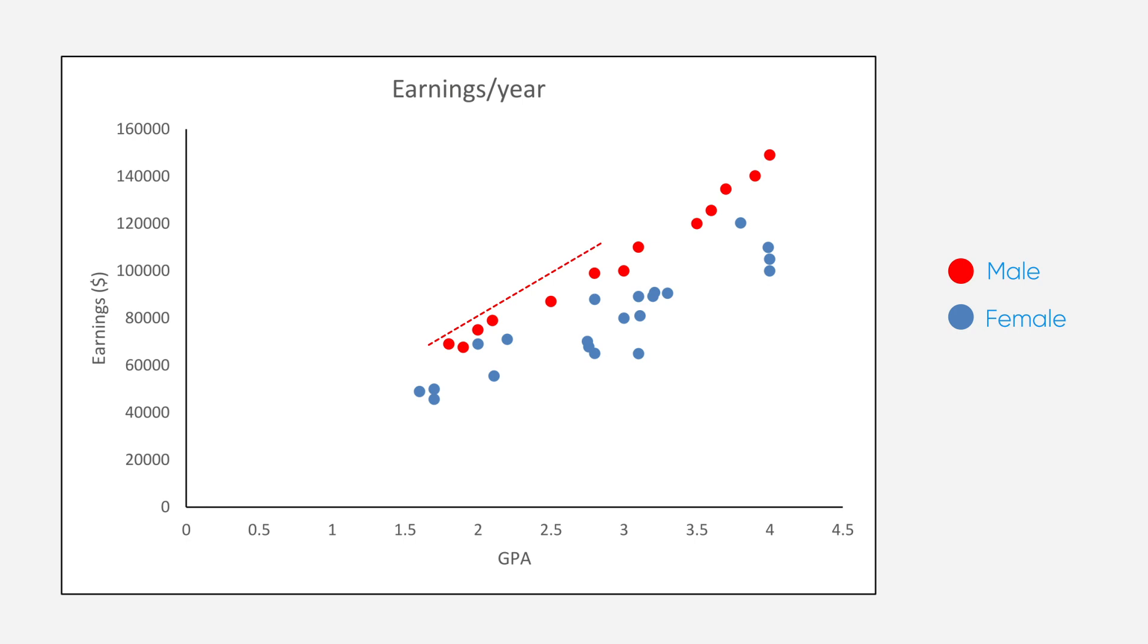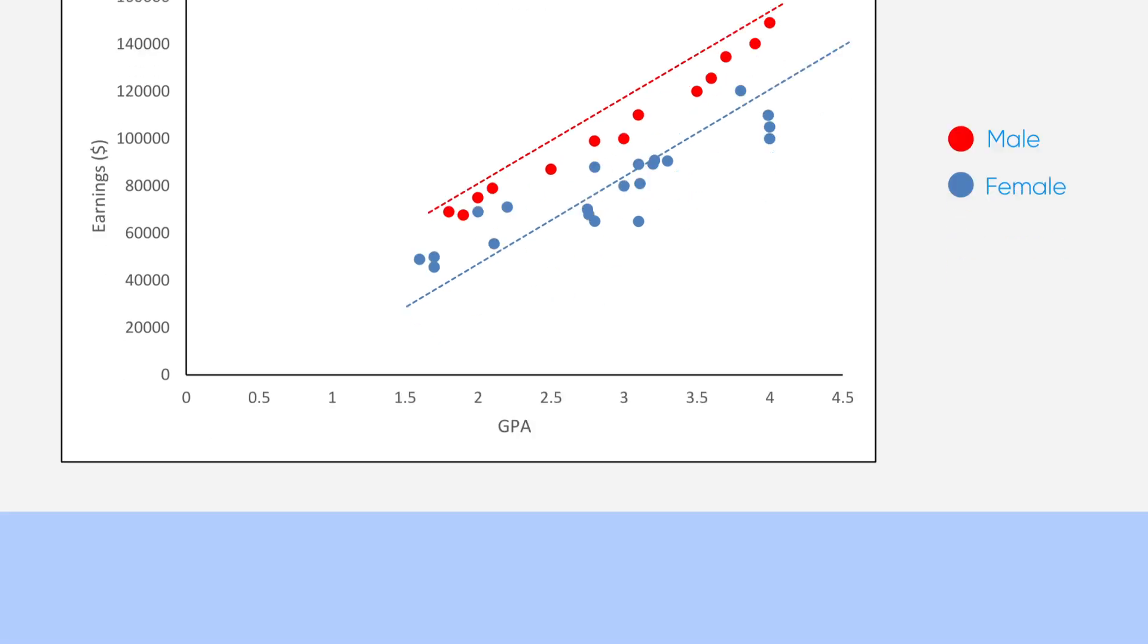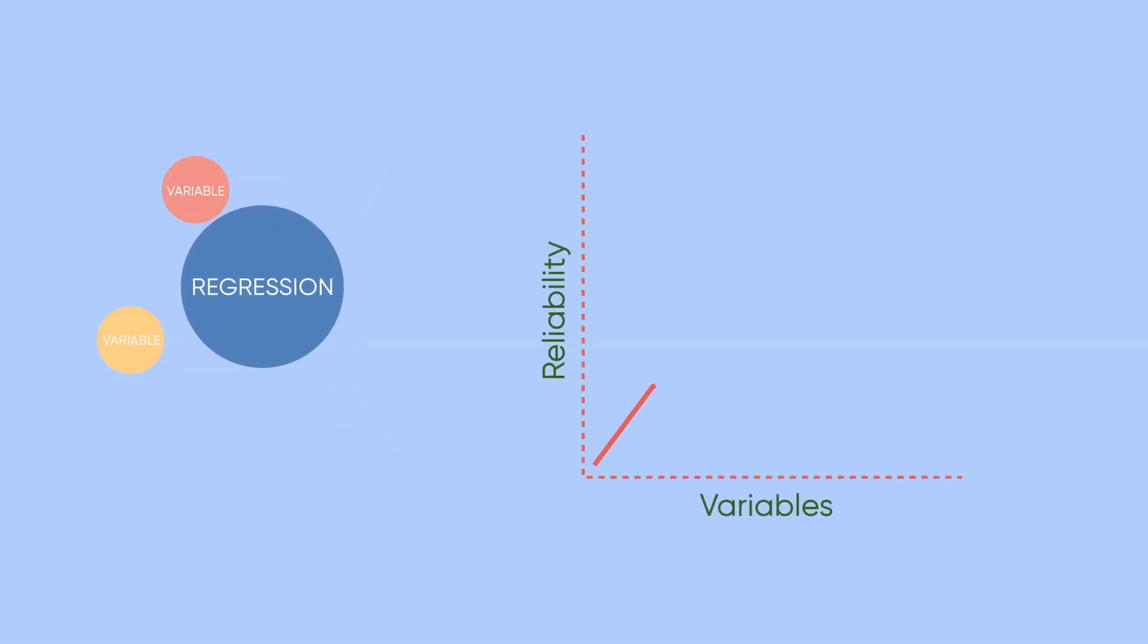We are thinking that male gender earns more than female gender in this particular case. You could also make one line for male and another line for female. This shows that regression analysis is very powerful where you can add multiple variables and prediction becomes more reliable and accurate.